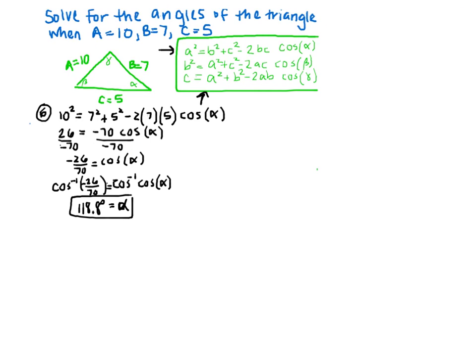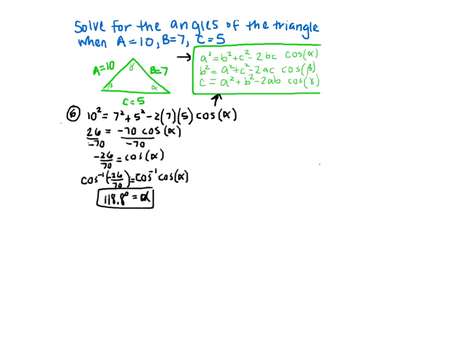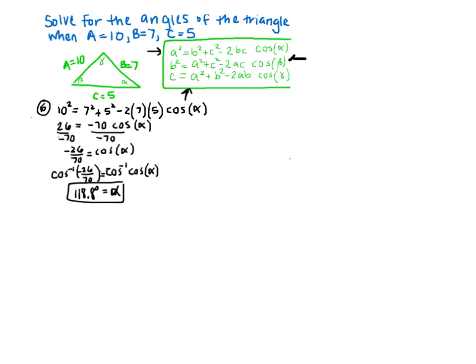Now we need to do the same thing to find beta. So we plug in B. 7 squared equals A squared, which is 10, plus C squared, which is 5, minus 2 times A times C, times cosine of beta.